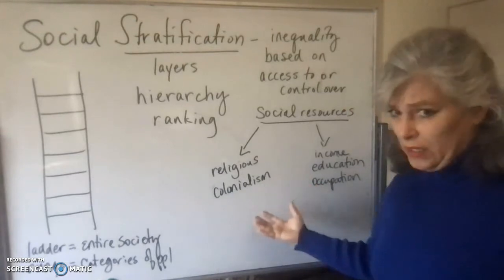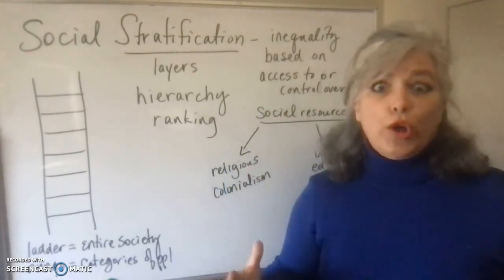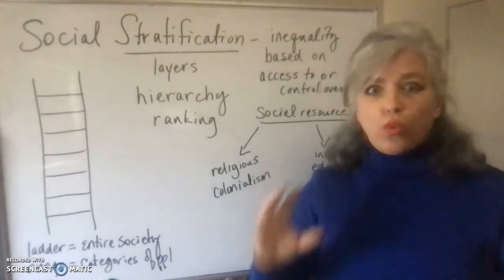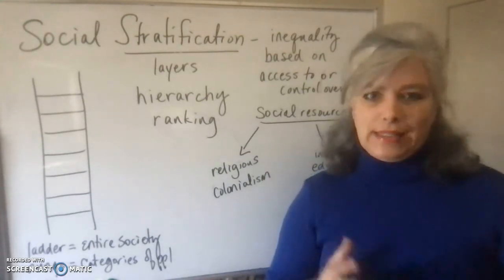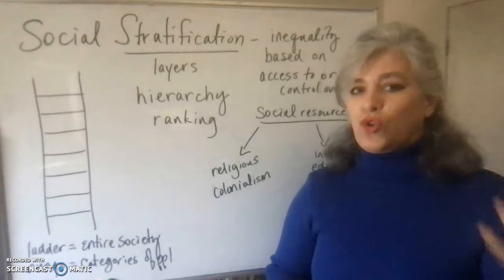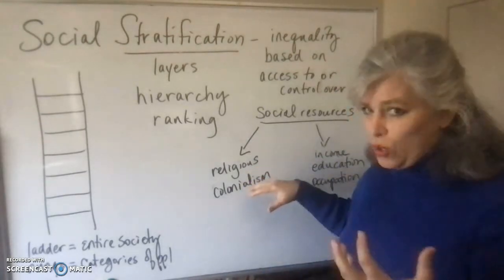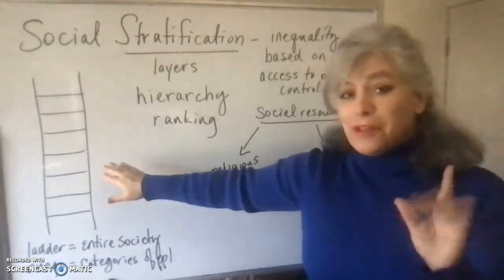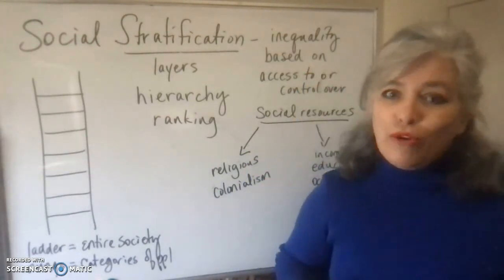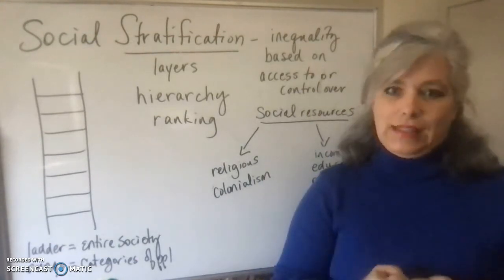Colonialism is also one of the reasons why you sometimes find segmented groups within a society. Look at South Africa, for instance, and the apartheid system that was in the news in the 1980s and 90s — it was also a caste system based on the ascribed status of race. These kinds of closed social mobility systems have a ladder with rungs, but there is no movement possible on those ladders in a caste or closed system of social mobility.